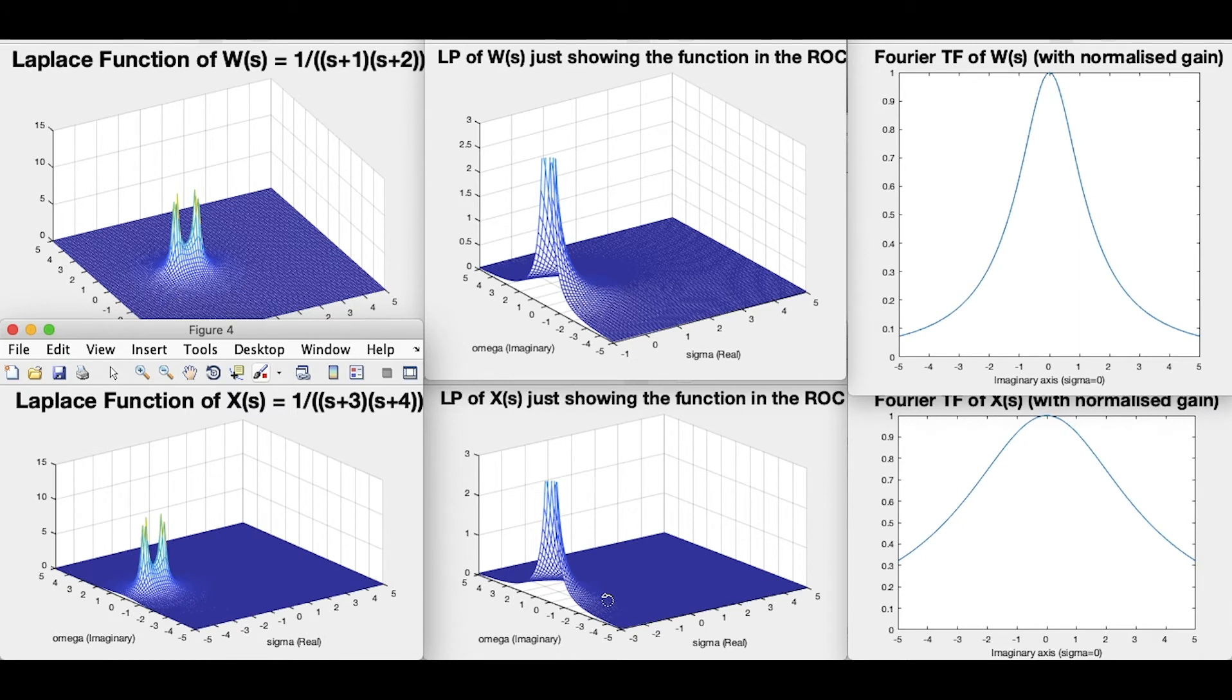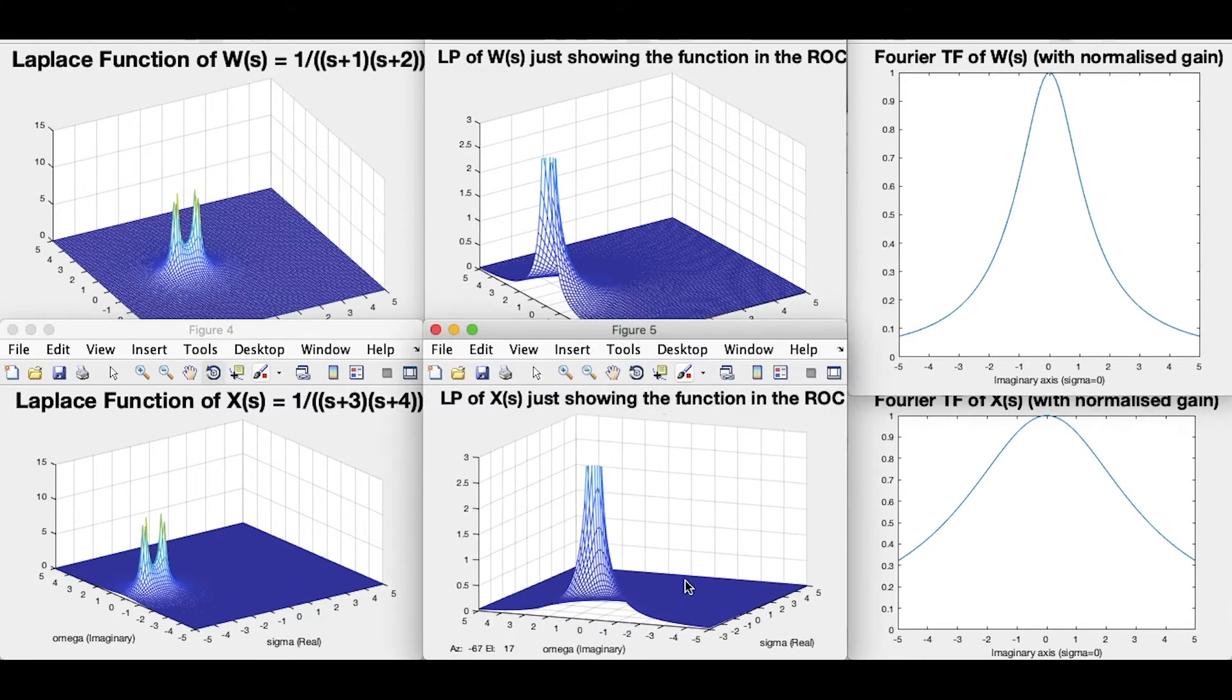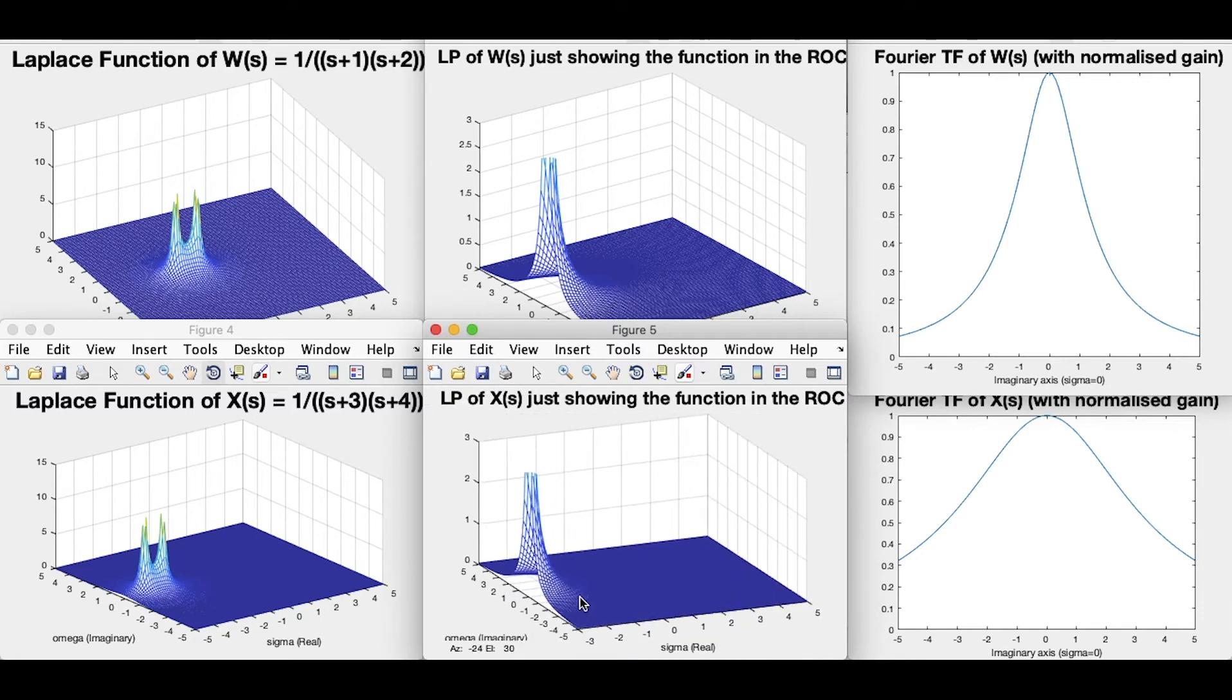The same holds with this picture here, looks the same, except the region of convergence now goes from minus three to infinity rather than minus one to infinity. But again, you can look in there and see where the Fourier transform is along the zero line for sigma equals zero.